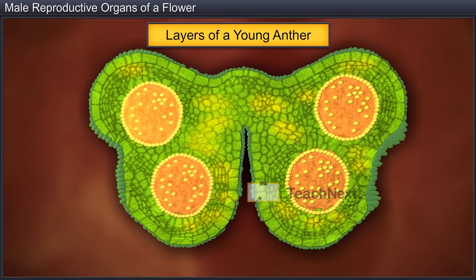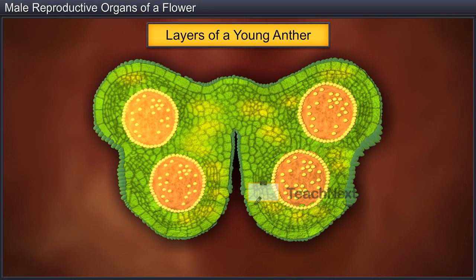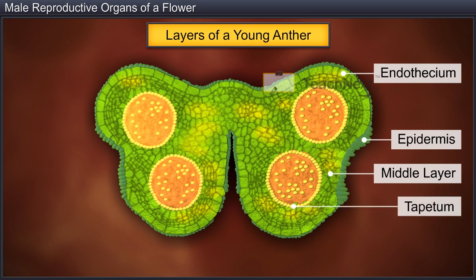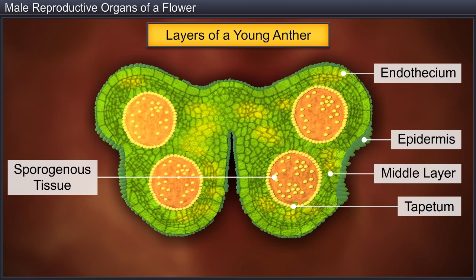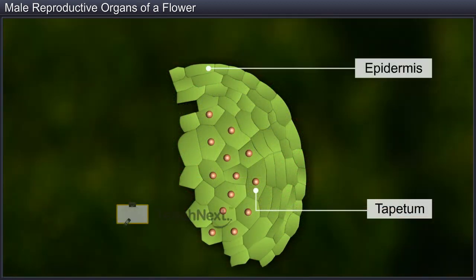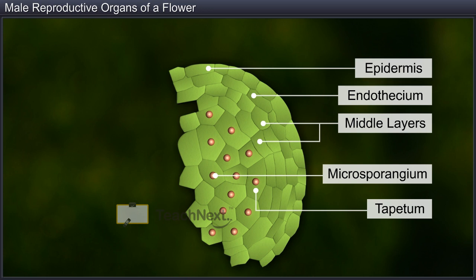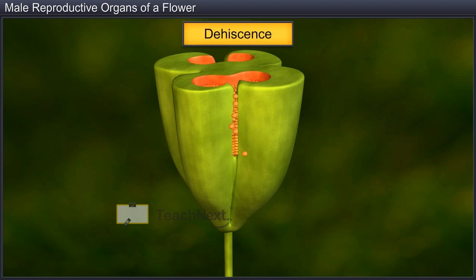In a young anther, the microsporangium is surrounded by a multilayered wall consisting of the epidermis, endothecium, middle layers, and the tapetum, the innermost layer, while the center is occupied by sporogenous tissue. The epidermis, endothecium, and middle layers protect the microsporangium, as well as aid in dehiscence, which is the splitting of the anther walls that causes the release of pollen grains.